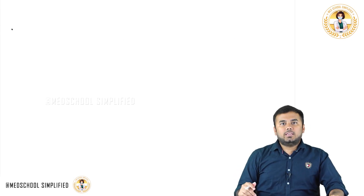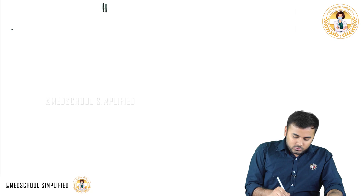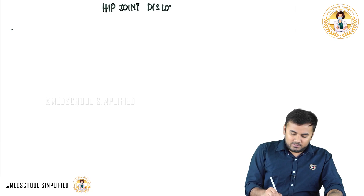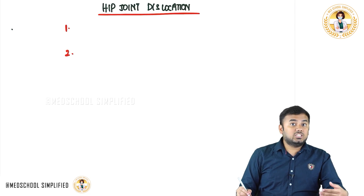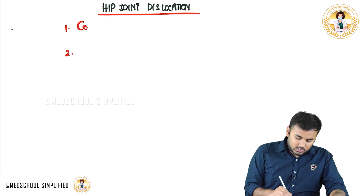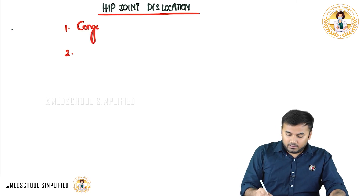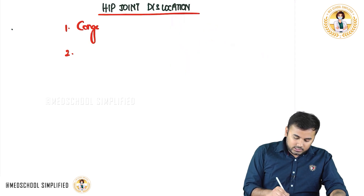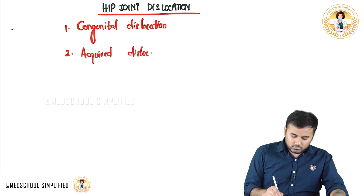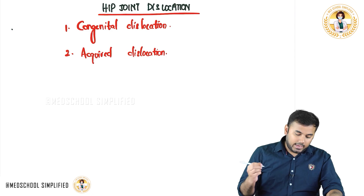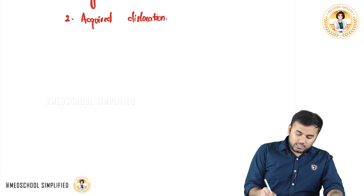Now we shall be discussing about hip joint dislocation. In case of hip joint dislocation, there are two different types: one is called congenital dislocation and the other one is called acquired dislocation. First we shall discuss about congenital dislocation.